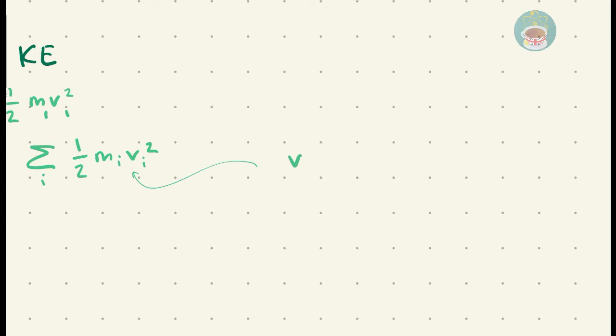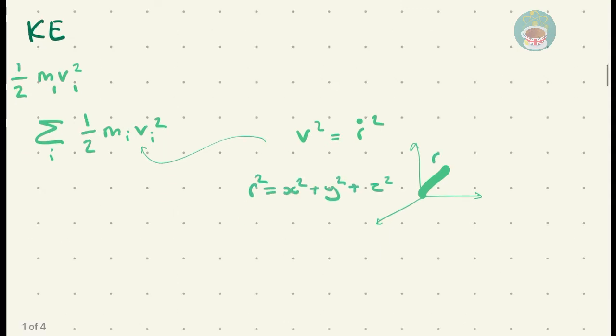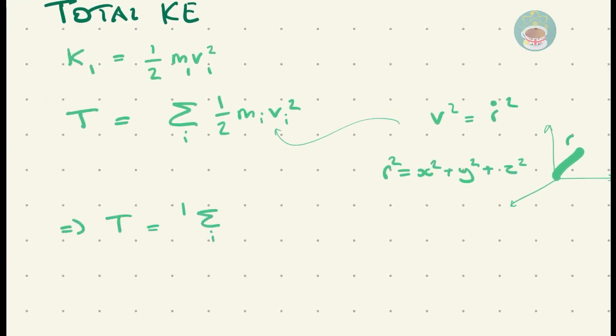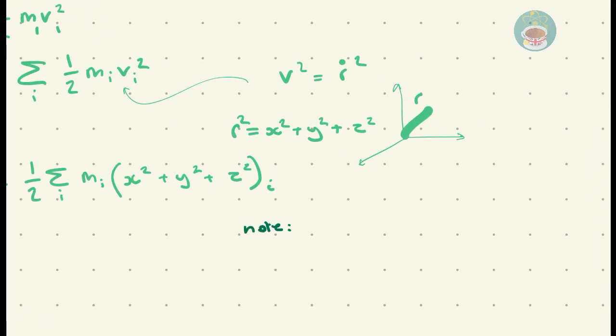What we're going to do is expand this velocity term into its separate Cartesian terms. Since V equals the time derivative of position r, then via Pythagoras, the term takes on the following form. We note that this is not in vector format, though it will be come later.